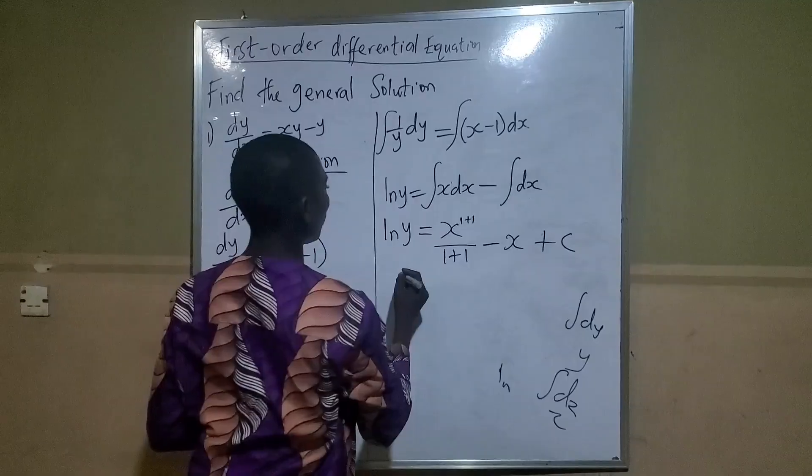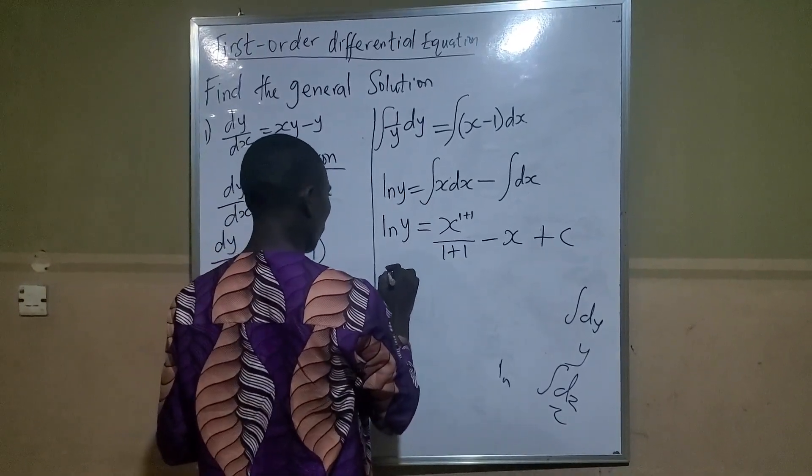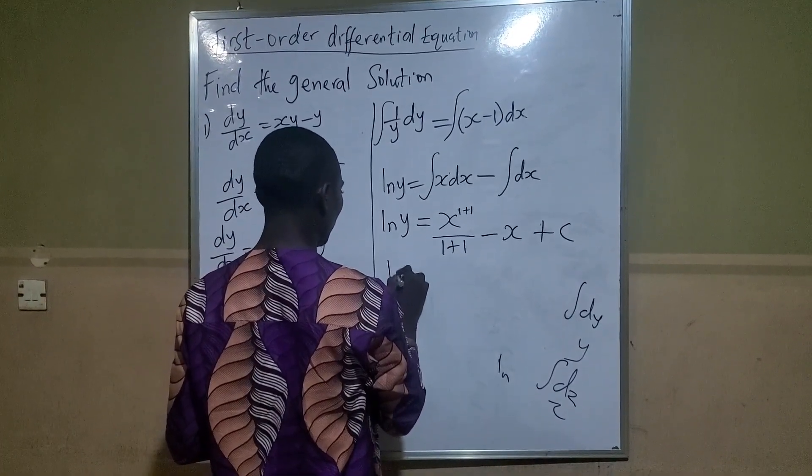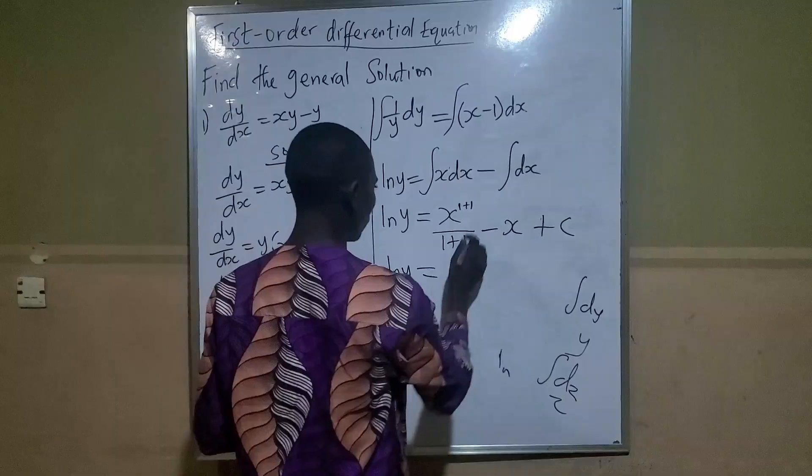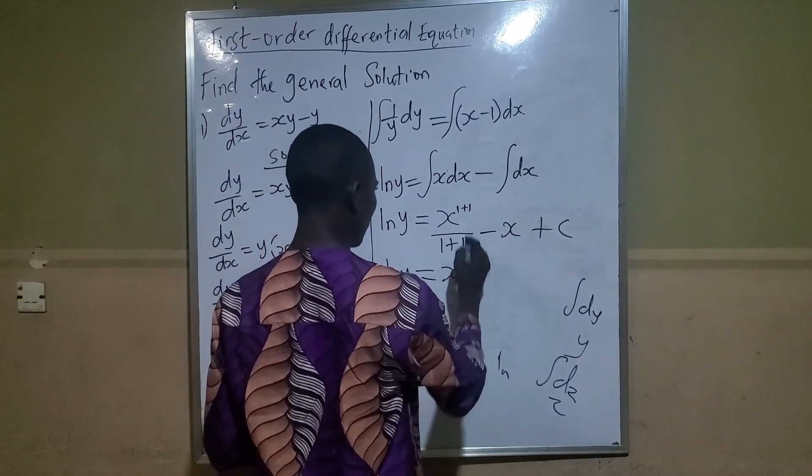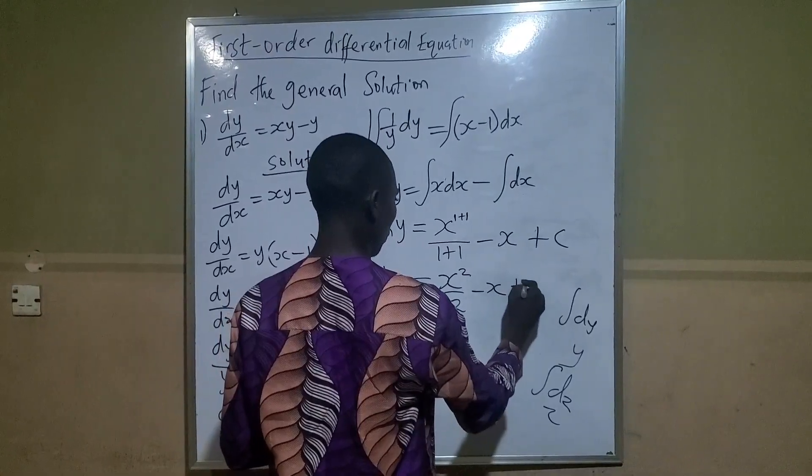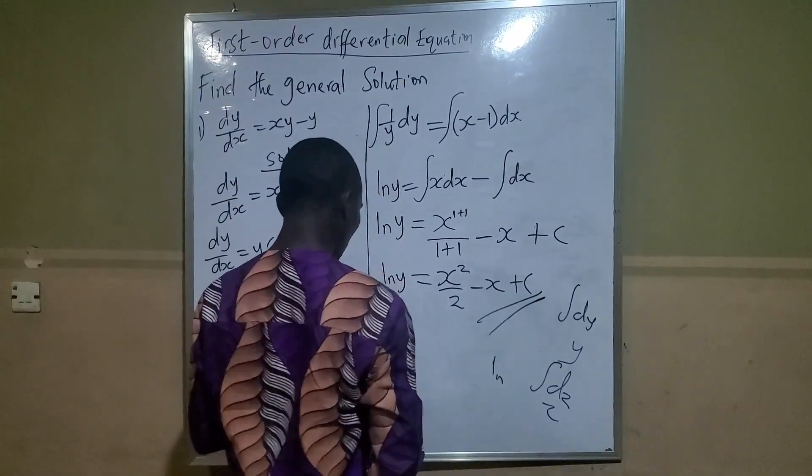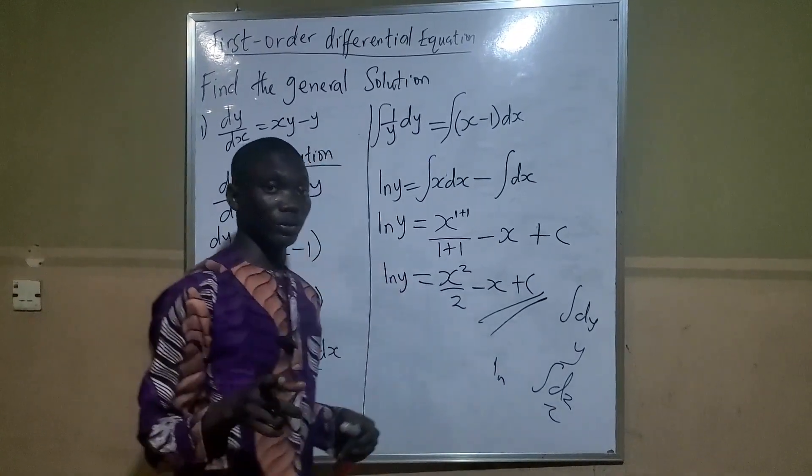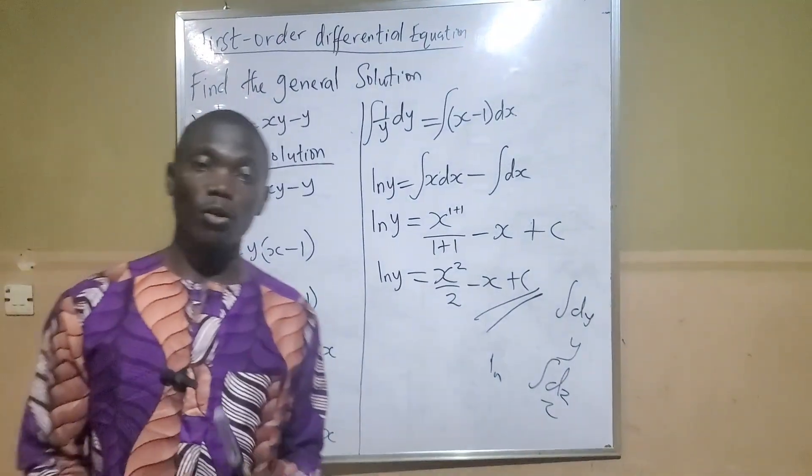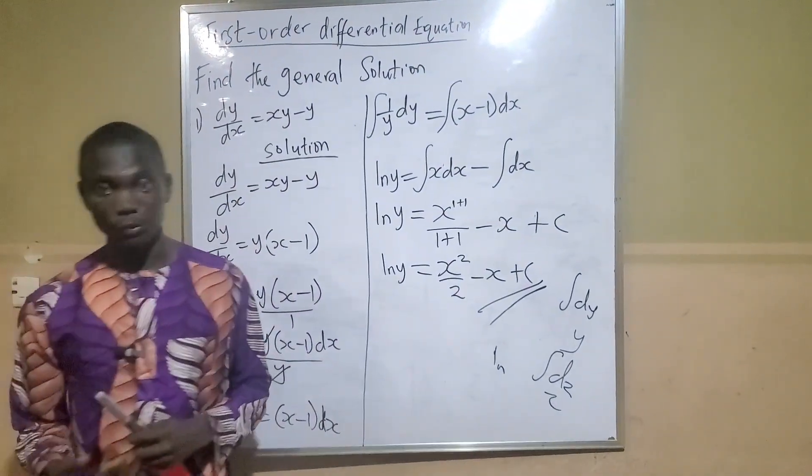We can further simplify this as ln|y| equals x²/2 minus x plus C. This is our final answer. See you in my next video. Please consider to subscribe, like, comment, and share. Thank you.